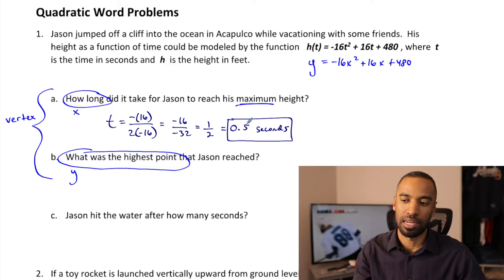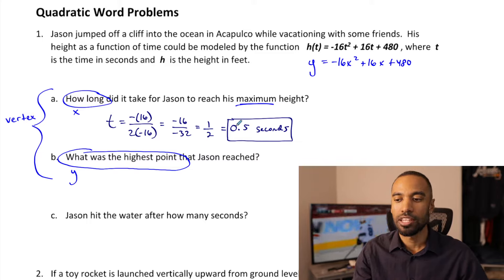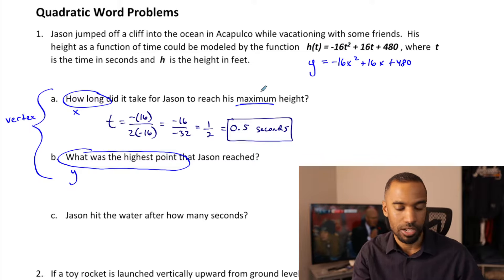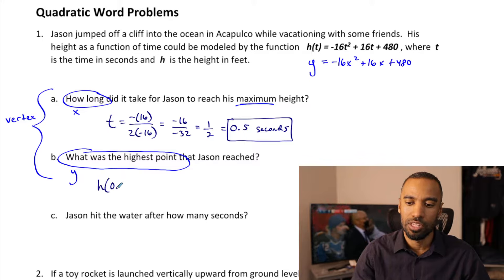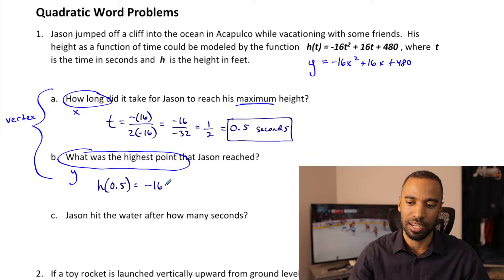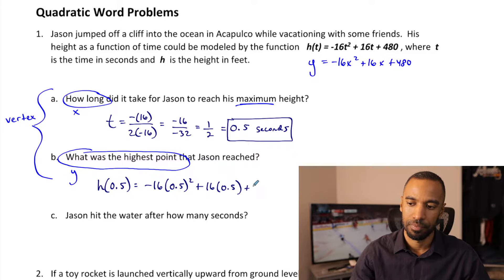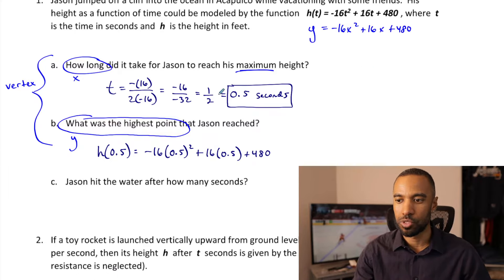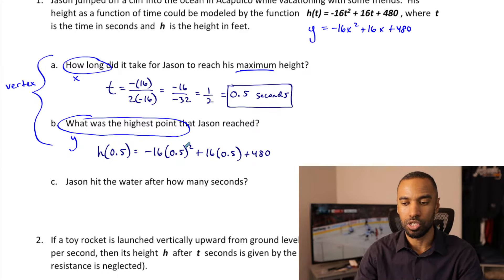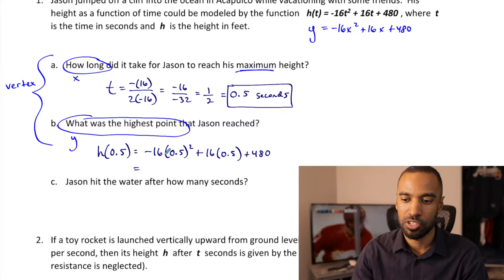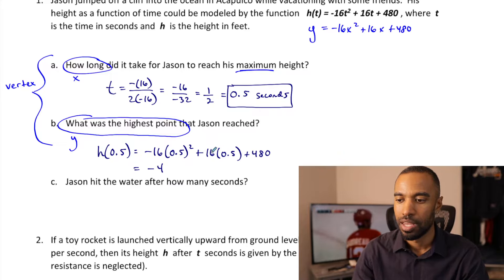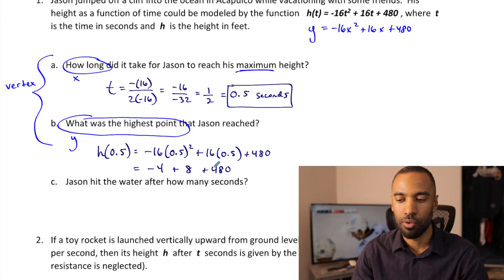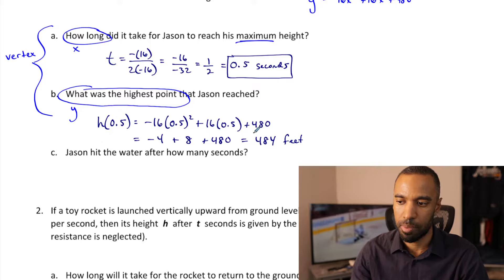Now, what is the maximum height? Take the t value and substitute it into the equation to find h(t). So h(0.5) = negative 16 times 0.5 squared plus 16 times 0.5 plus 480. Since 0.5 is one half: one half squared is one fourth, negative 16 times one fourth is negative 4, plus 8, plus 480. Negative 4 plus 8 is 4, and 4 plus 480 is 484. Jason reaches a maximum height of 484 feet.